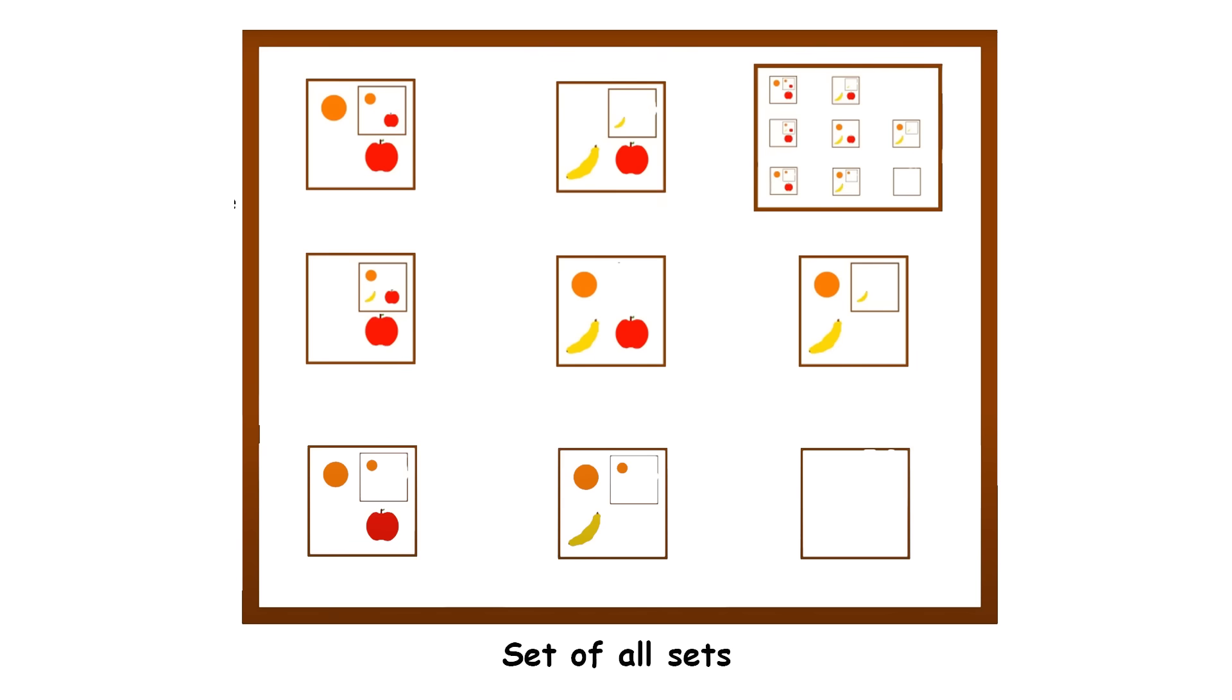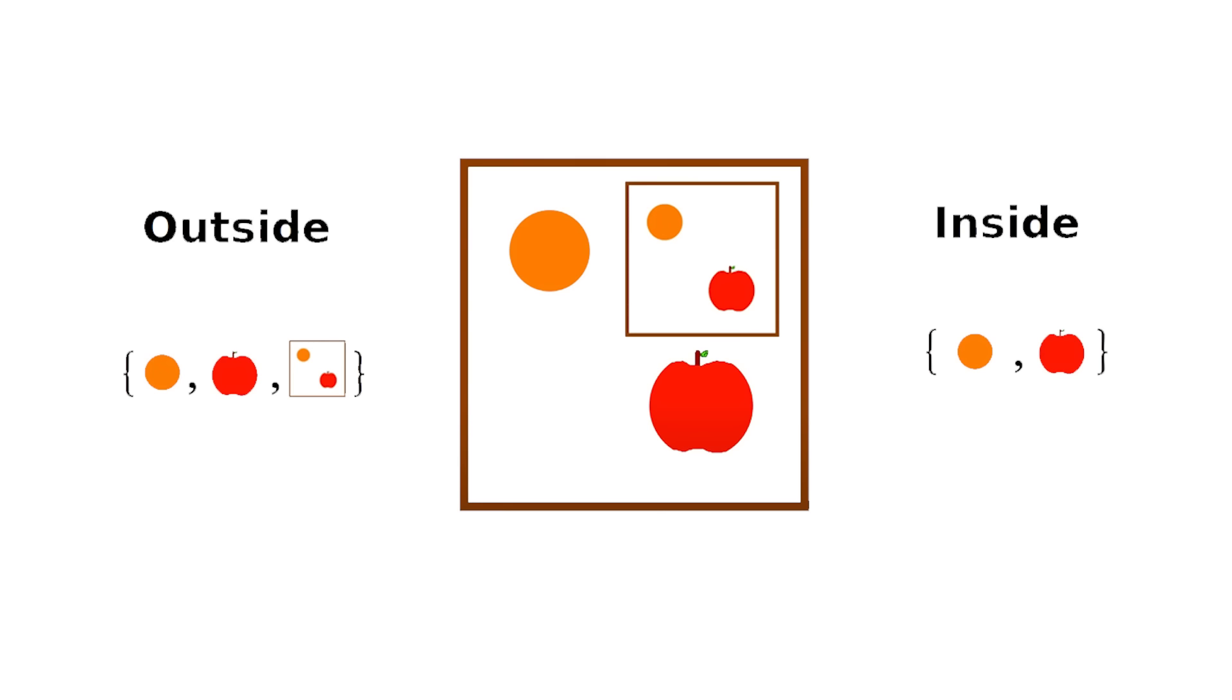But here's where things get complex. Russell realized that if you apply this rule to all conditions, it leads to some strange situations. Imagine a set of all sets that don't contain themselves. Sounds okay at first, but then we ask, does this set contain itself? If it does, then it shouldn't, because it's supposed to contain only sets that don't contain themselves. But if it doesn't contain itself, then it should, because it fits the condition of sets that don't contain themselves. Baffling, right? This mess-up is called Russell's Paradox.